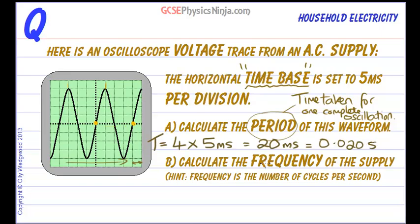Part B is to calculate the frequency of the supply. And the hint is that frequency is the number of cycles per second.